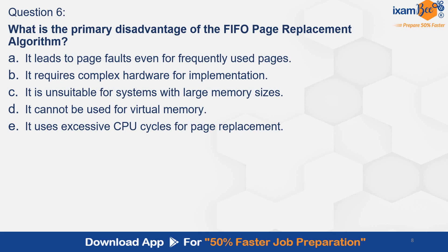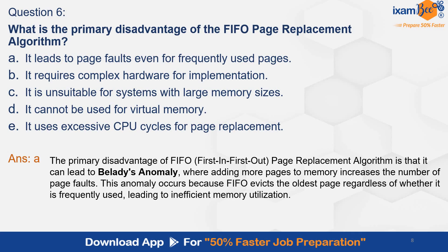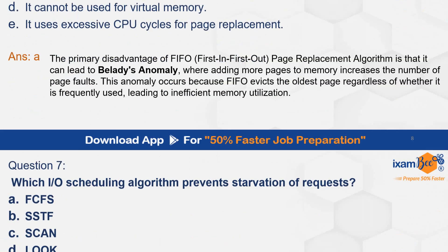Question 6. What is the primary disadvantage of the FIFO page replacement algorithm? Option A. It leads to page faults even for frequently used pages. B. It requires complex hardware for implementation. C. It is unsuitable for systems with large memory sizes. D. It cannot be used for virtual memory. E. It uses excessive CPU cycles for page replacement. And the correct answer is A. The primary disadvantage of FIFO is that it can lead to Belady's anomaly, where adding more pages to memory increases the number of page faults. This anomaly occurs because FIFO evicts the oldest page regardless of whether it is frequently used, leading to inefficient memory utilization.